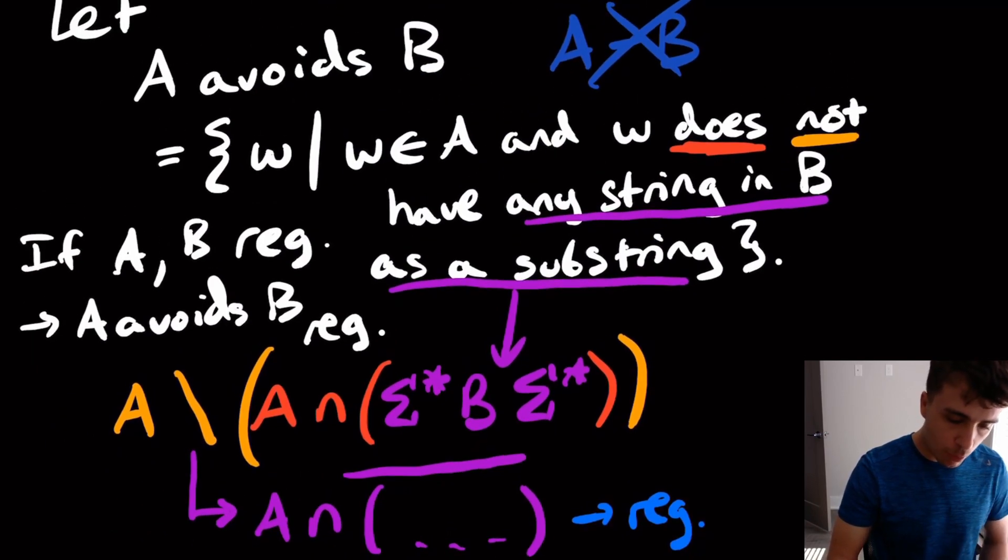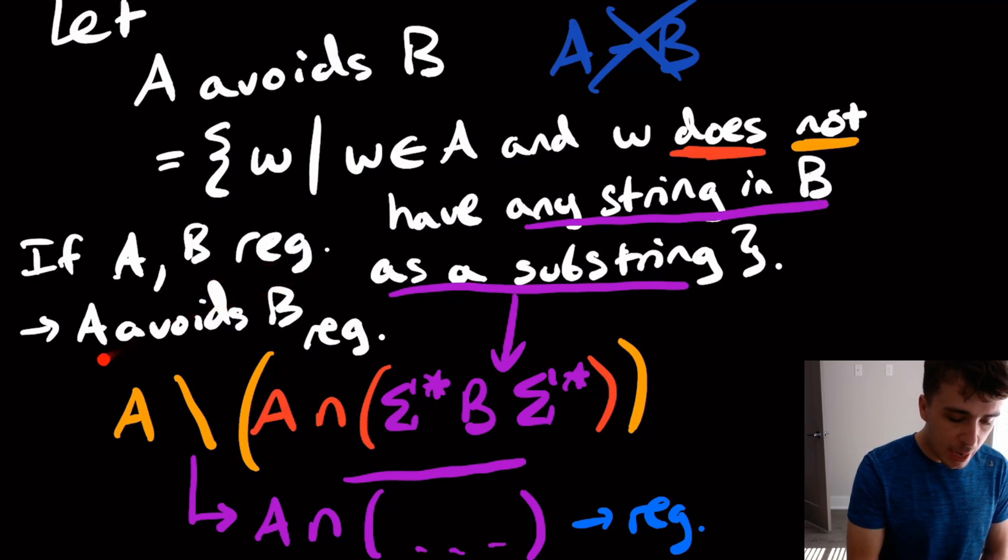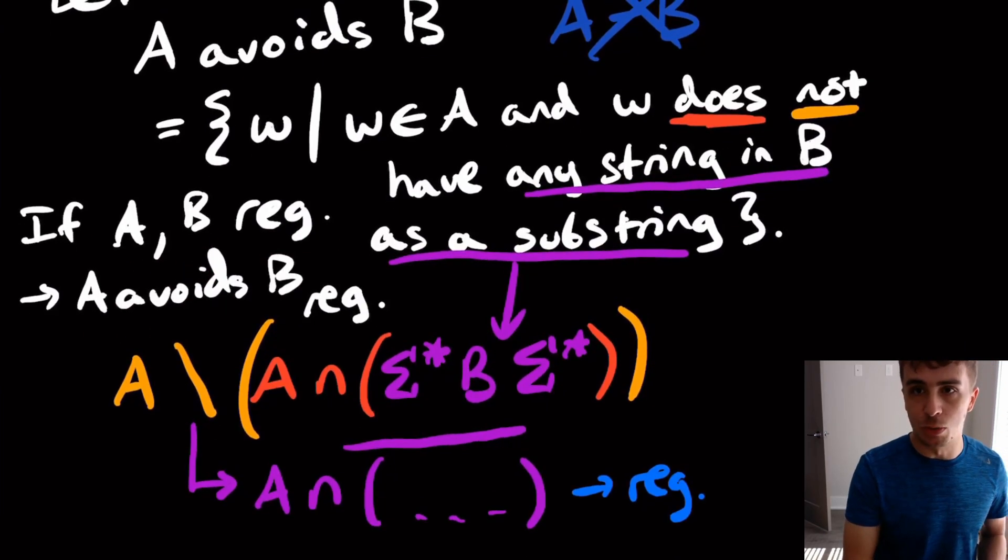And then therefore, what we can conclude is that if A and B are regular, then that means that A avoids B is regular.